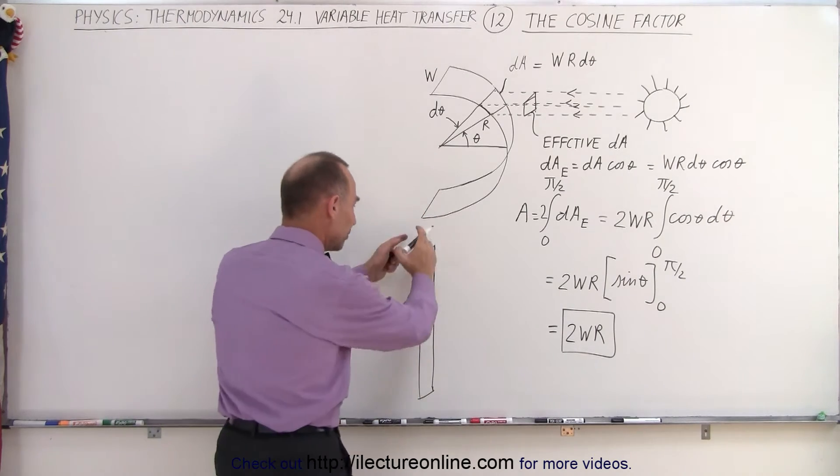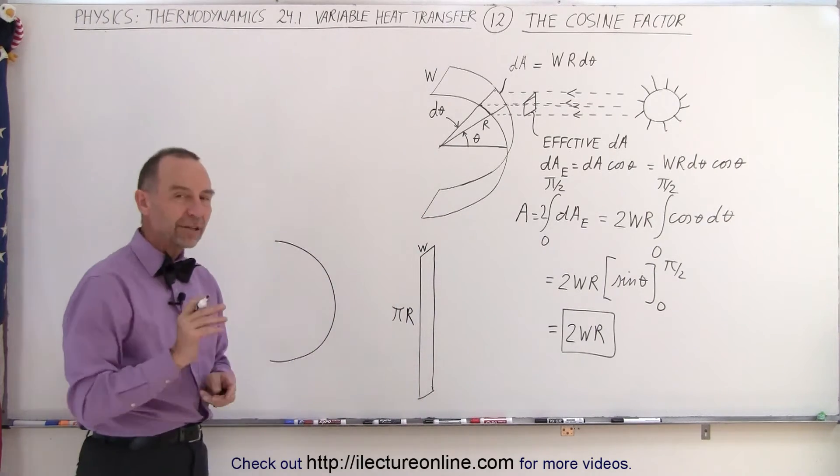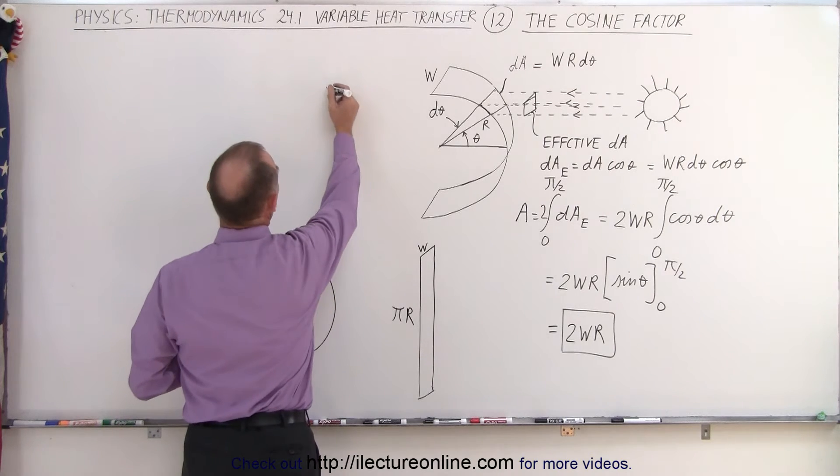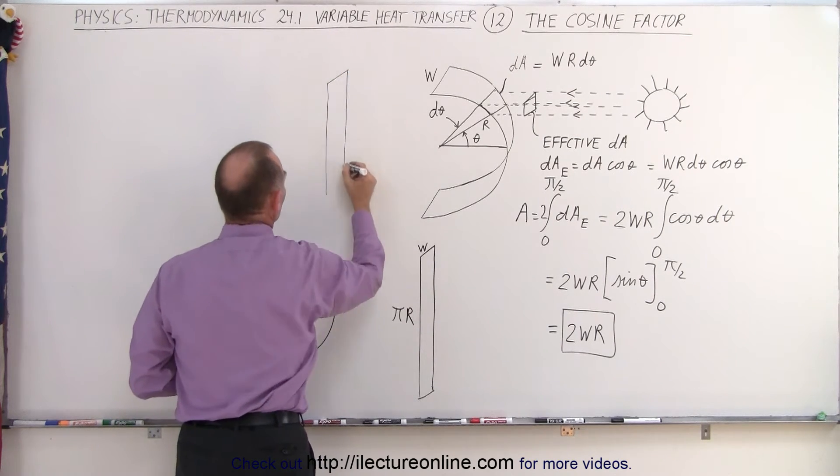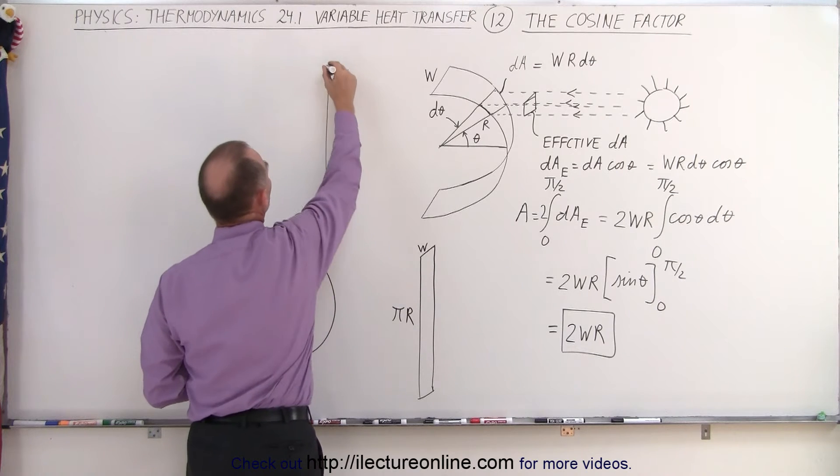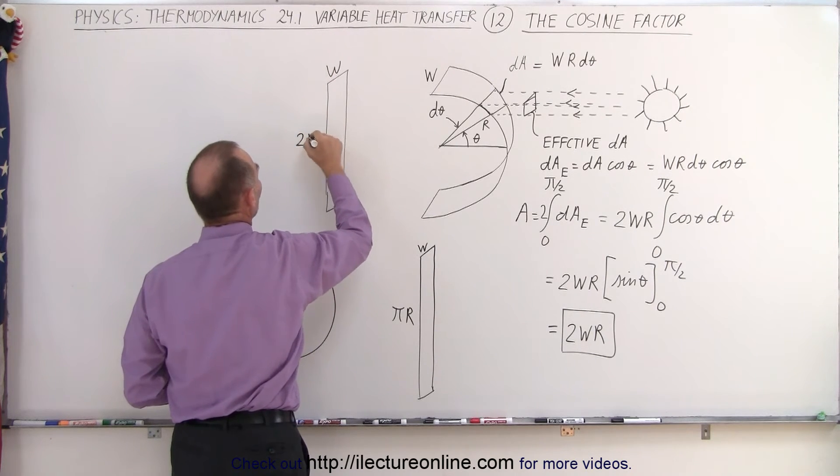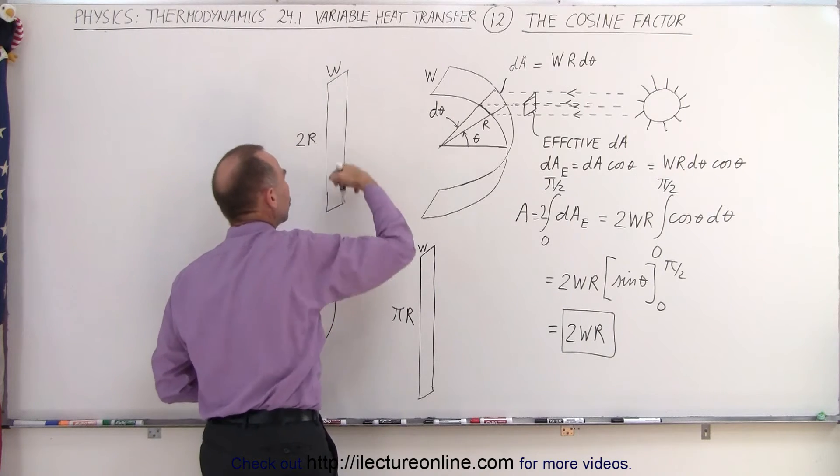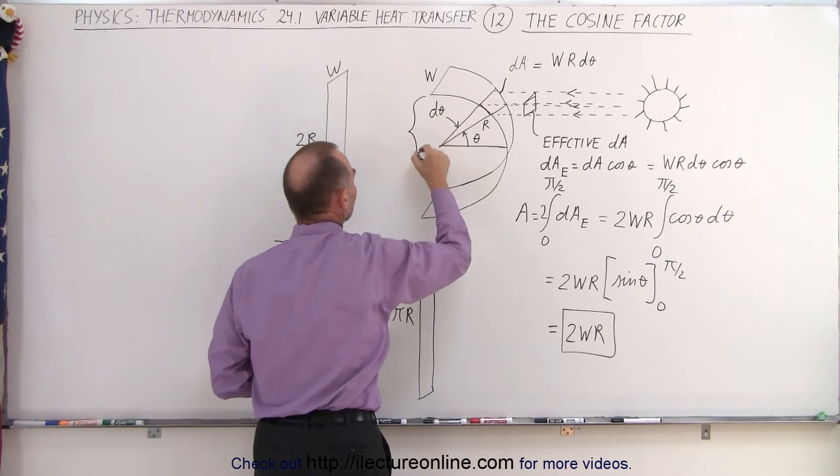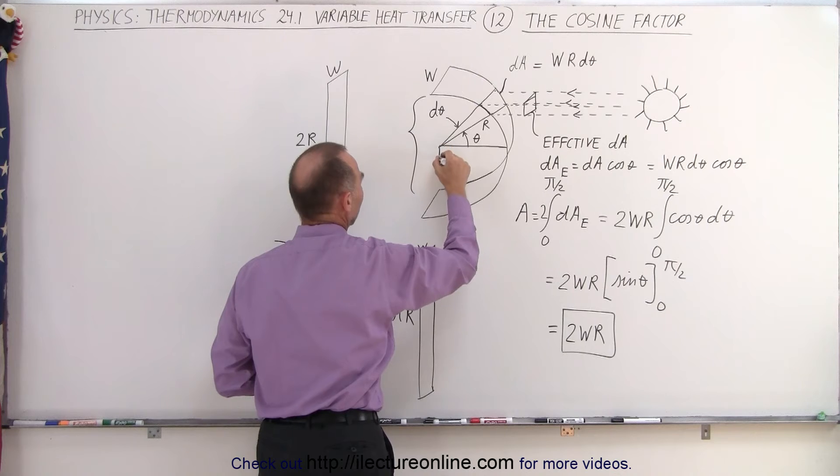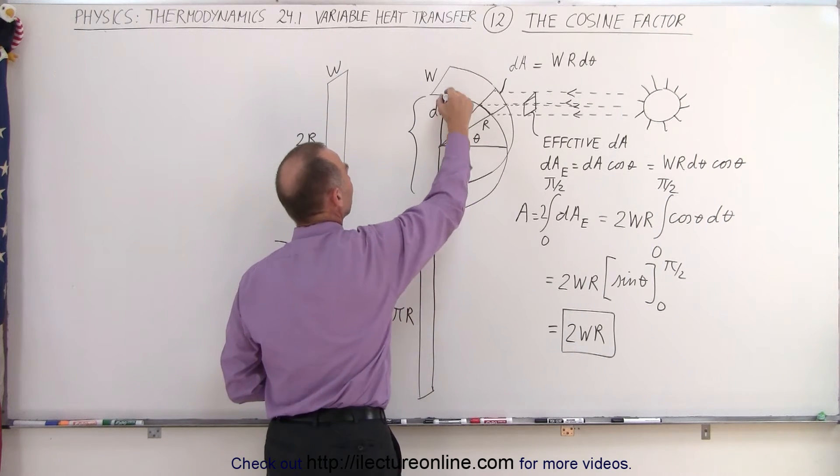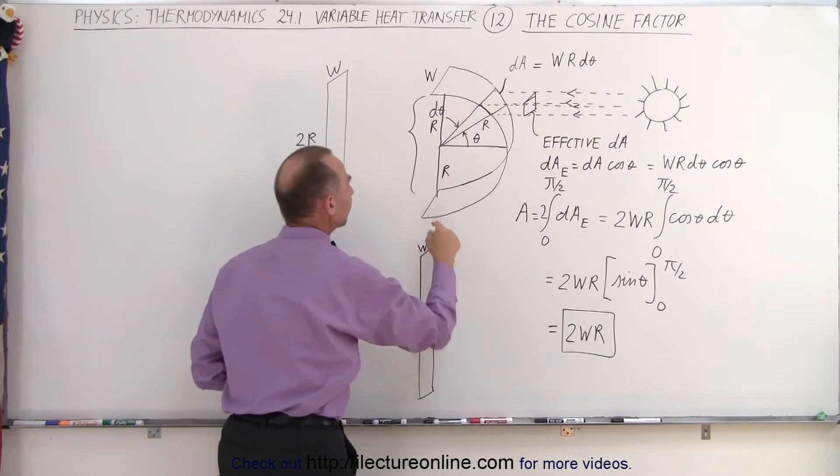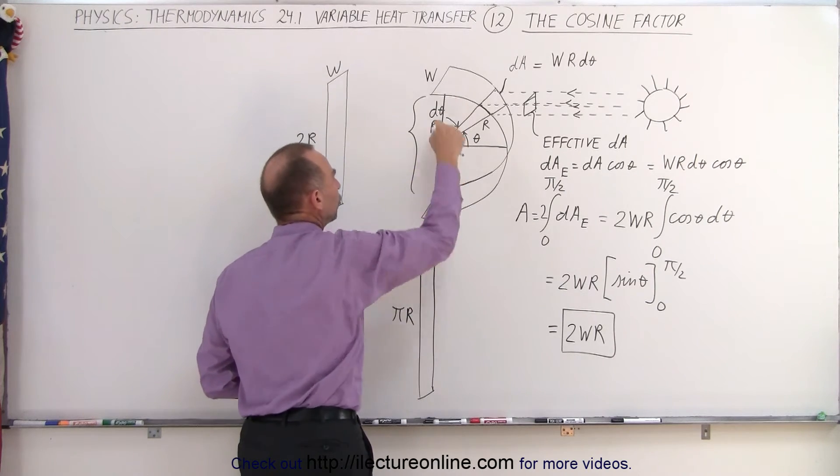How does that relate to my original strip? If I now make a new strip, and I make the strip like this, and I make the strip still of a width w, but now of the height of 2 times r, notice that this height, 2r, is equal to this height, 2r, because if I draw a line from there to there, that's equal to the radius of that circle. If I draw a line from there to there, that's also equal to the radius, so the total length here is 2r.